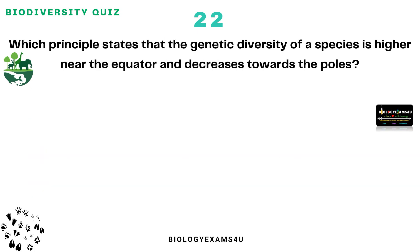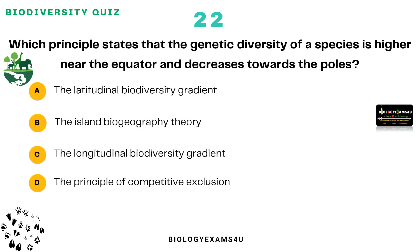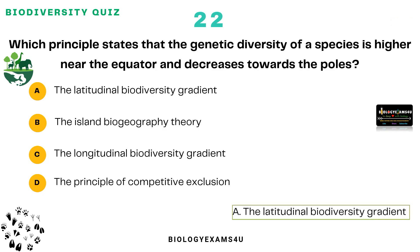Question number 22: Which principle states that the genetic diversity of a species is higher near the equator and decreases towards the poles? Option A: The latitudinal biodiversity gradient. Option B: The island biogeographic theory. Option C: The longitudinal biodiversity gradient. Option D: The principle of competitive exclusion. The correct answer is: the latitudinal biodiversity gradient.